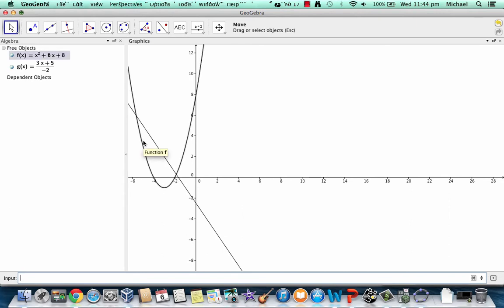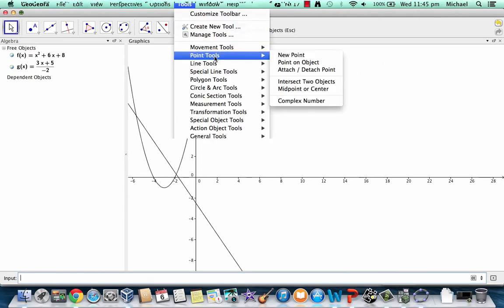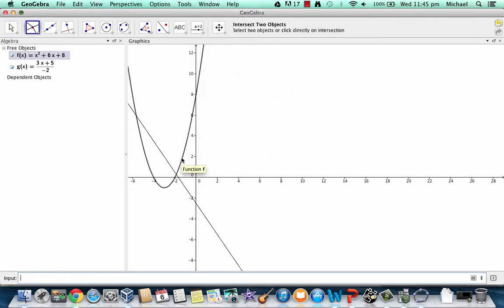So now that's beneficial for us because we can do a couple different things with this. The first thing we can do is find their intersection graphically. So in other words when are they equal to each other? Well they're equal to each other when they cross or when they intersect. So if you go to the tools here and you go to point tools and intersect two objects what you do is you select the first line and the second line nearer to one point that you want to intersect first and it automatically finds the intersect there and the intersect there.